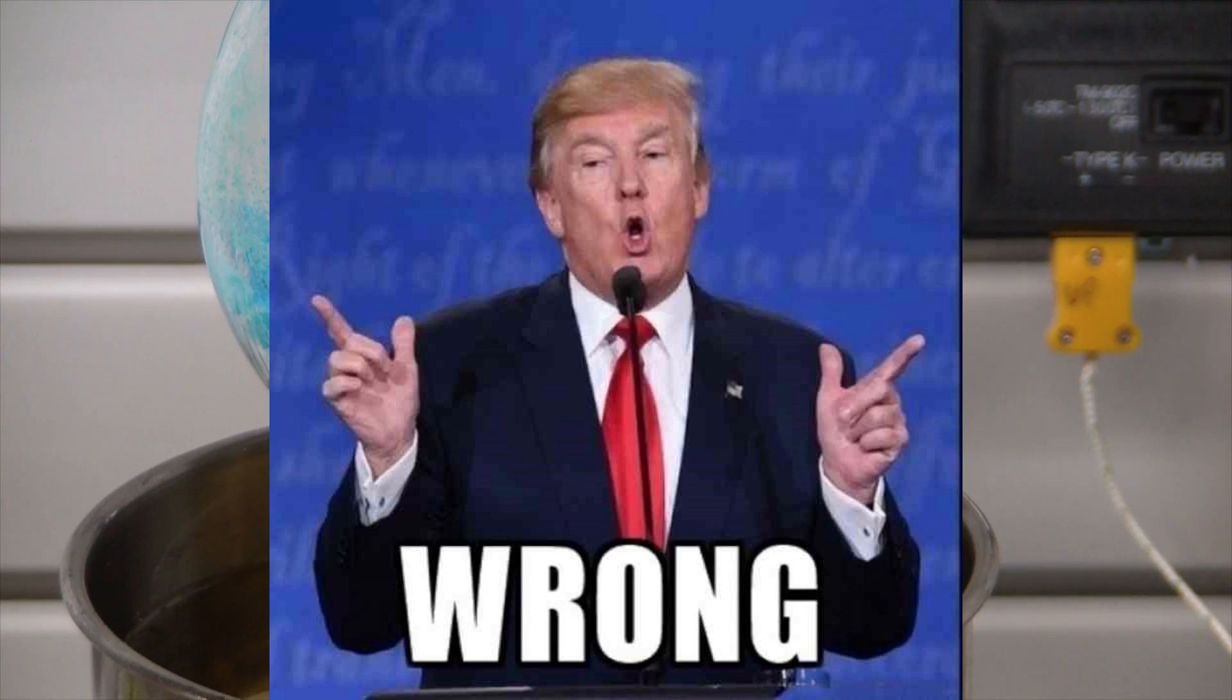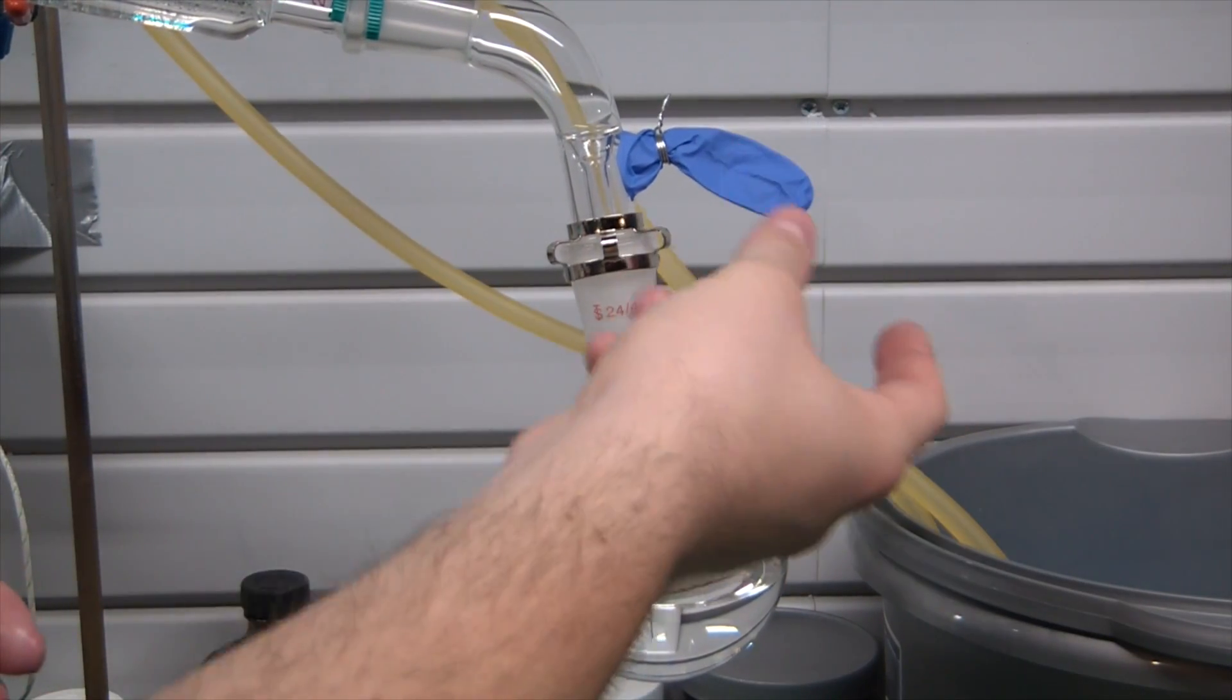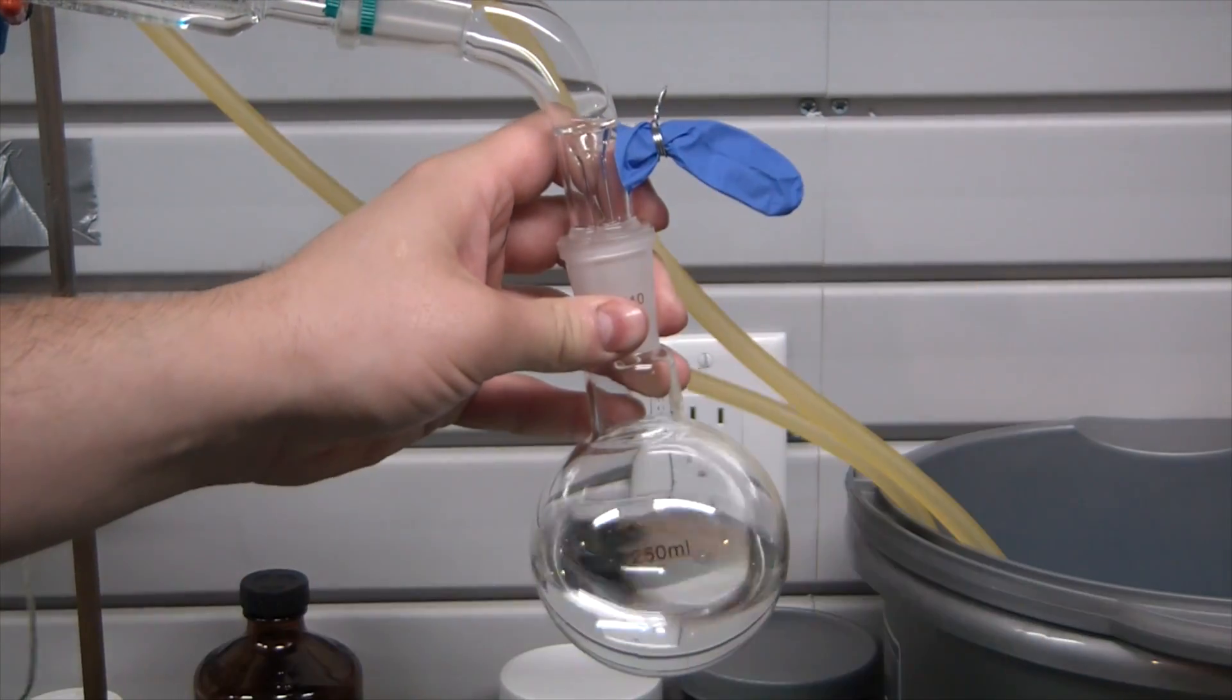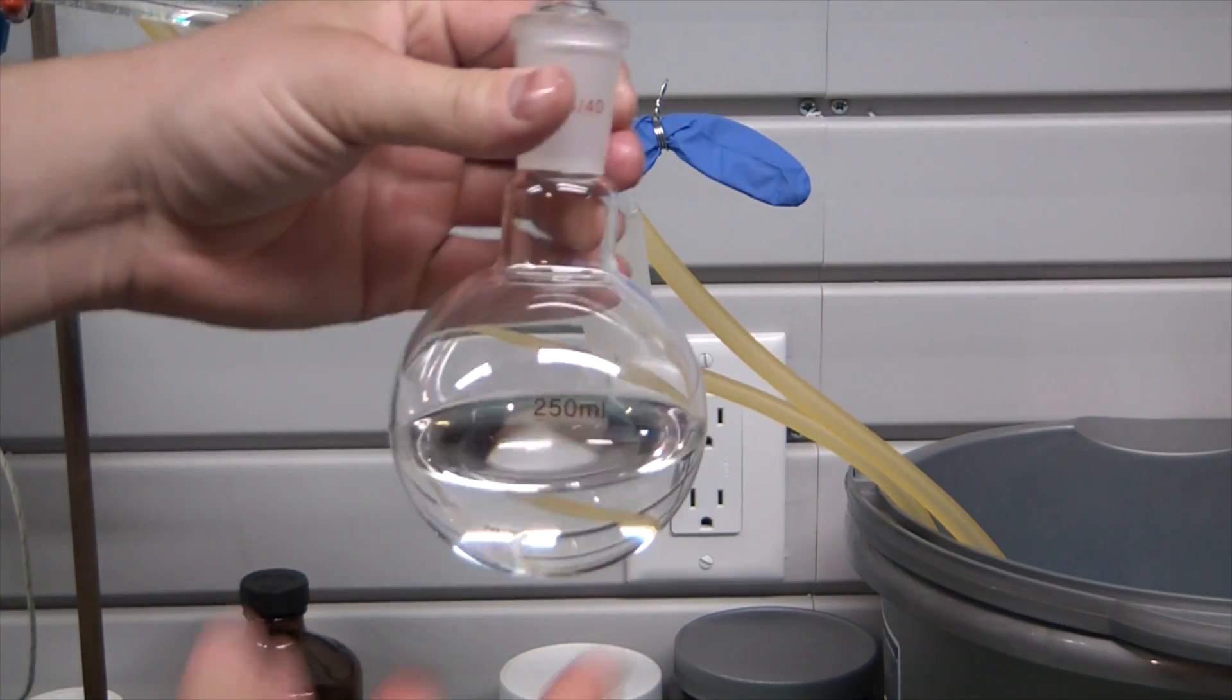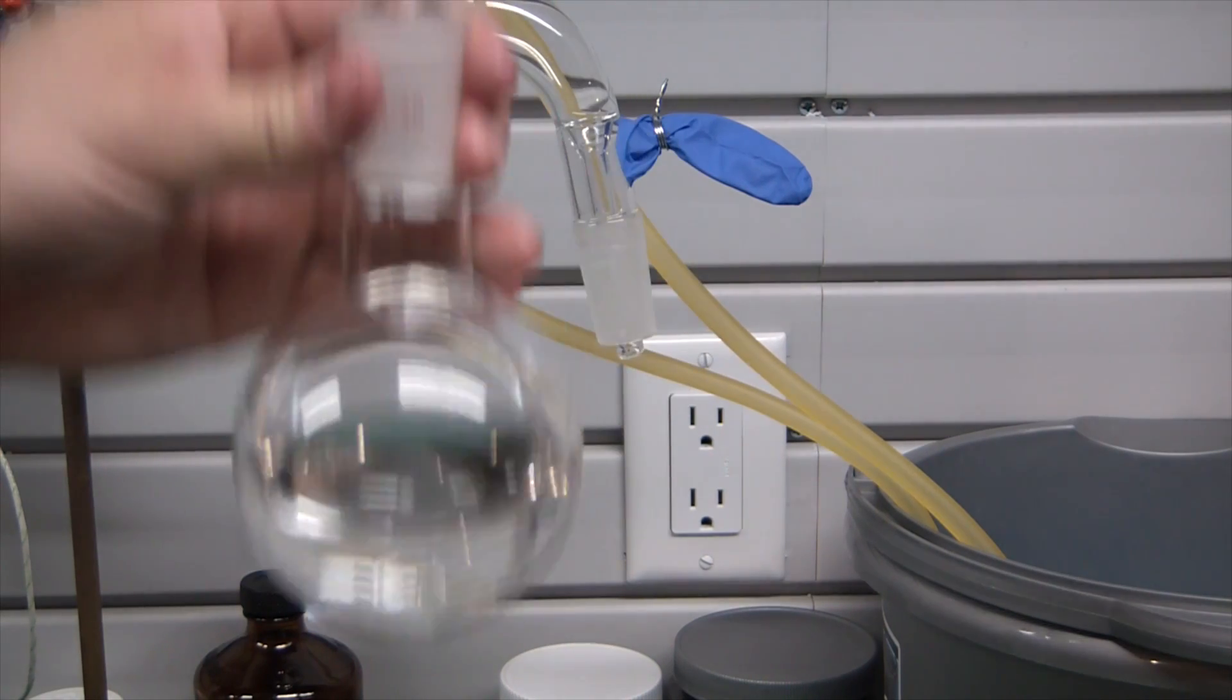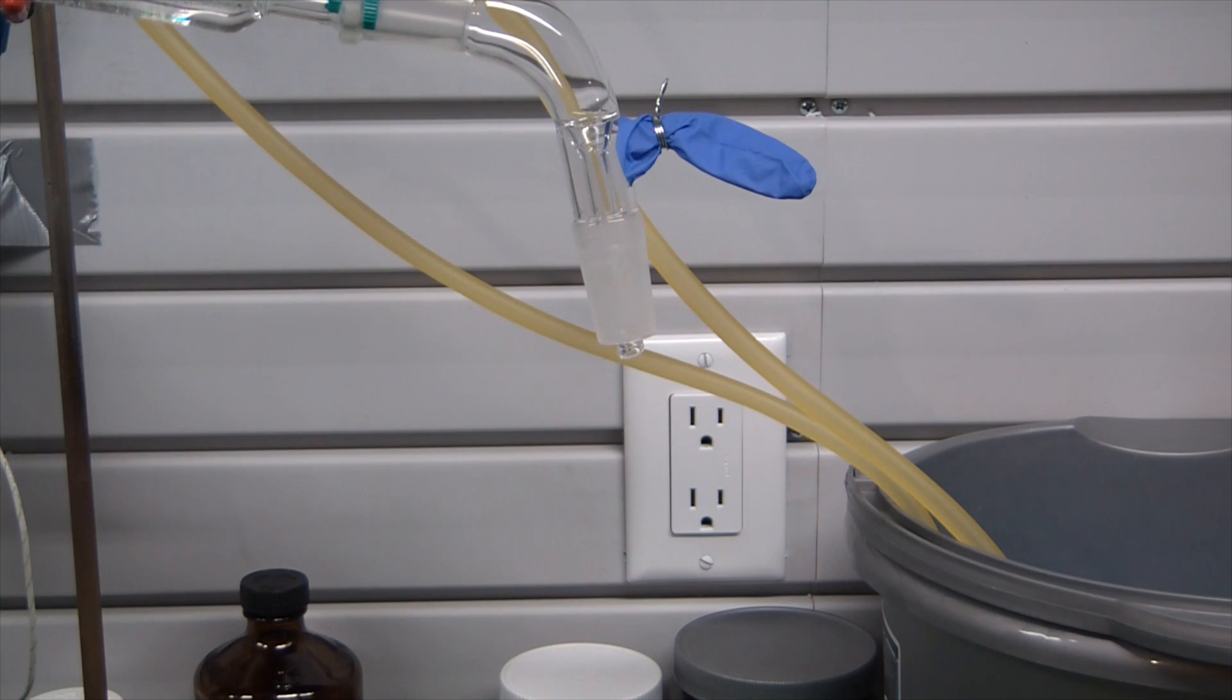So as soon as we remove it, you can see this nitrile glove kind of sucked in, which means we got to stop atmosphere from getting in there. And there we go, that is our beautiful anhydrous ethanol. So I'm curious to see what kind of purity we got. Hopefully it's at a hundred.